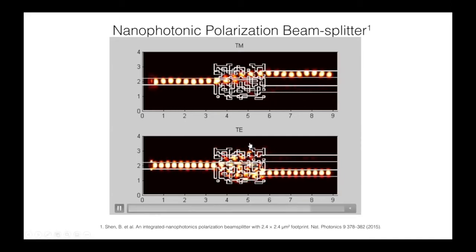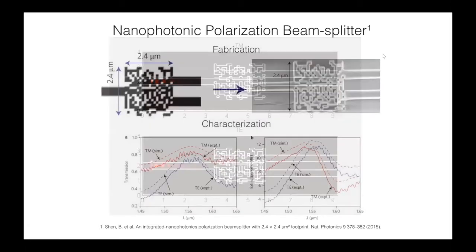This is what the structure looks like once the optimization is complete. After that, in order to verify the simulations with experiments, we completed fabrication of this. The device has been fabricated in a silicon-on-silicon-dioxide platform. In this case, we chose focused ion beam milling to create these tiny structures. During characterization, we edge-coupled the light source. This is designed for a 1.55 micron wavelength. We see that this kind of device also has broadband performance, and the transmission curves for the TE and TM modes in each of the coupling outputs match pretty closely with the simulations shown in the dotted line.